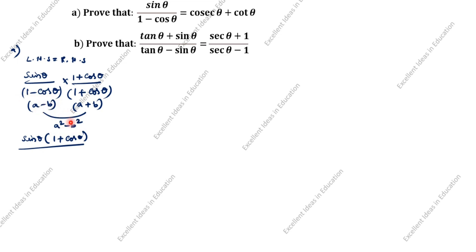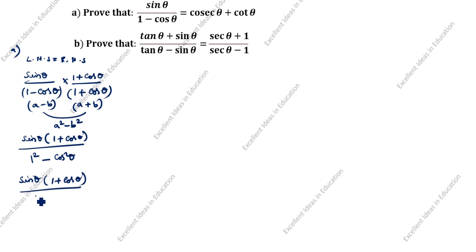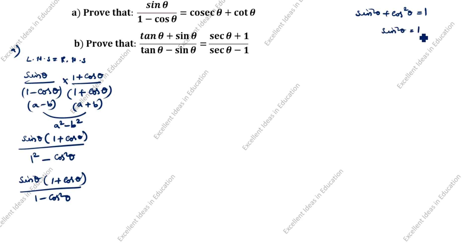Here A squared is 1 squared and B squared is cos squared theta. So the denominator becomes 1 squared minus cos squared theta. What is the formula of sin squared theta? Sin squared theta is equal to 1 minus cos squared theta.